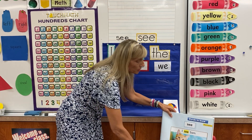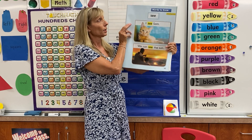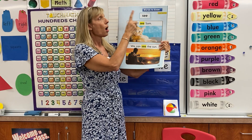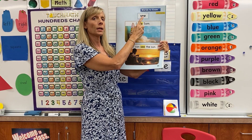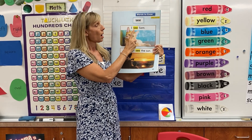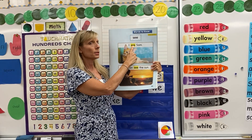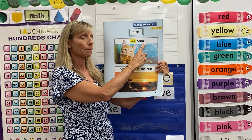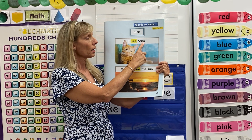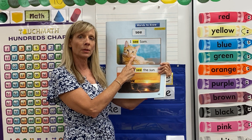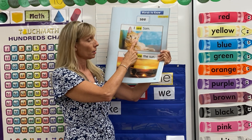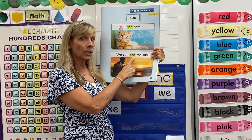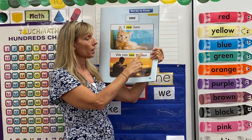Let's read these sentences with the word 'see.' I see Sam. Sam must be the cat. We can see the sun.